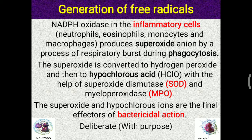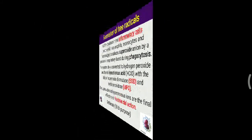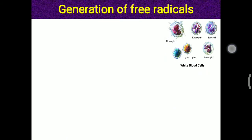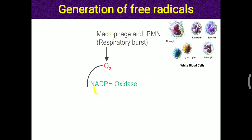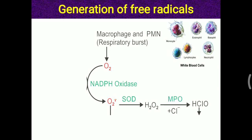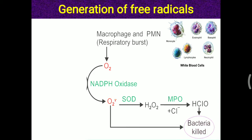Free radicals are purposefully generated inside the body by inflammatory cells to kill bacteria. Specifically, macrophages produce free radicals (superoxide) via NADPH oxidase. This free radical is converted into hydrogen peroxide by superoxide dismutase (SOD), and H2O2 is further converted into hypochlorous acid by myeloperoxidase (MPO). Hypochlorous acid is the main effector for killing bacteria, though superoxide anion can also directly kill bacteria.